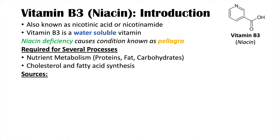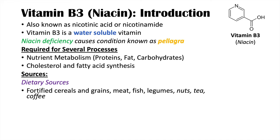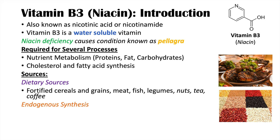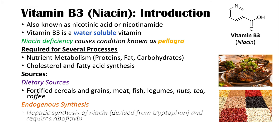The dietary sources of vitamin B3 include fortified cereals and grains — cereals and grains that have had niacin added to them artificially — as well as meat and fish, legumes, and to a lesser extent nuts, tea, and coffee. We can also get niacin from endogenous synthesis, meaning we make it inside our own bodies through hepatic synthesis in our liver. Niacin is synthesized in the liver from tryptophan, and this process requires riboflavin.